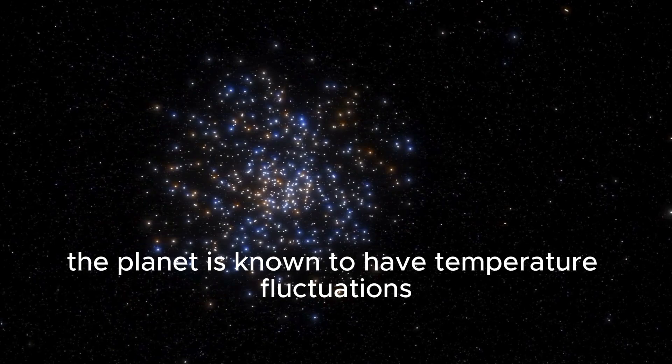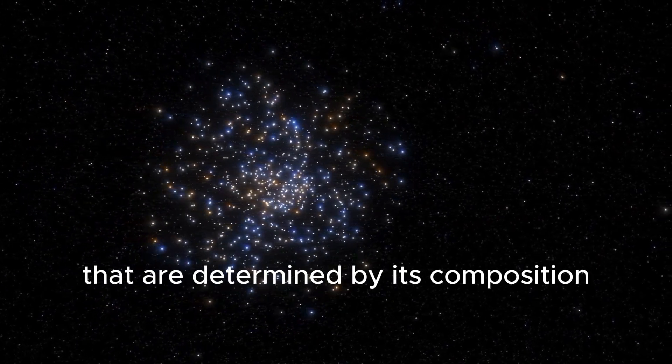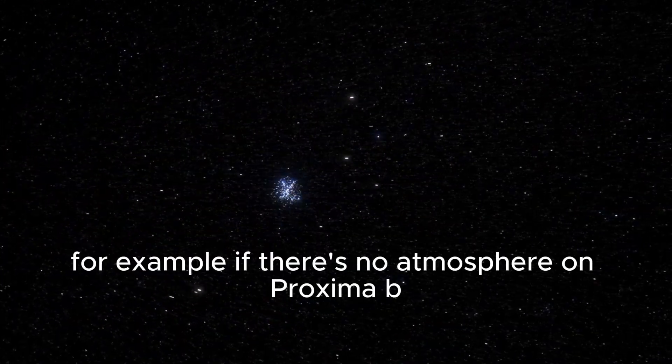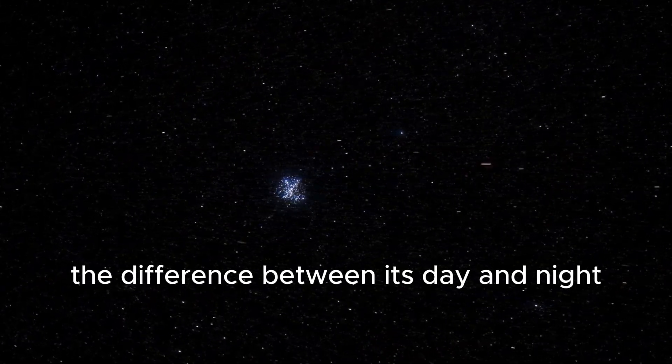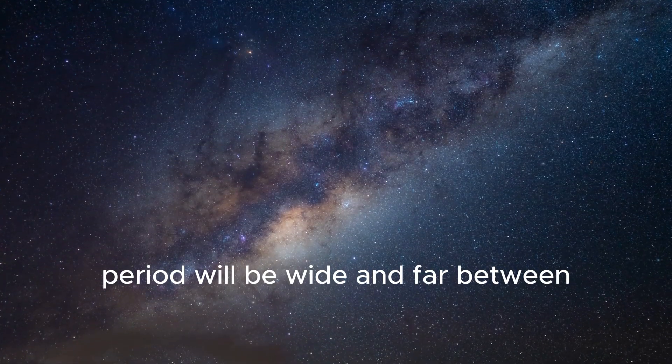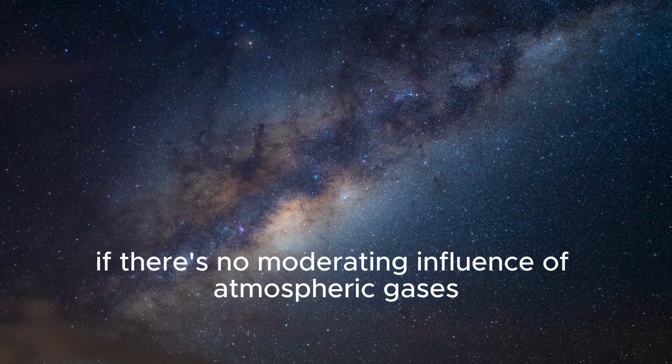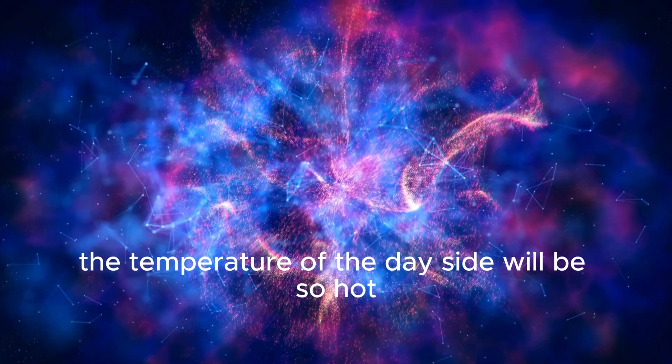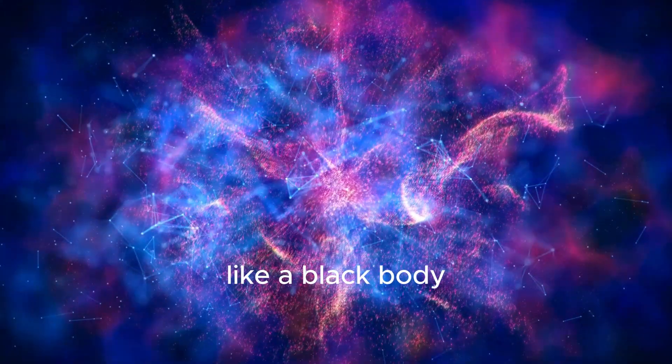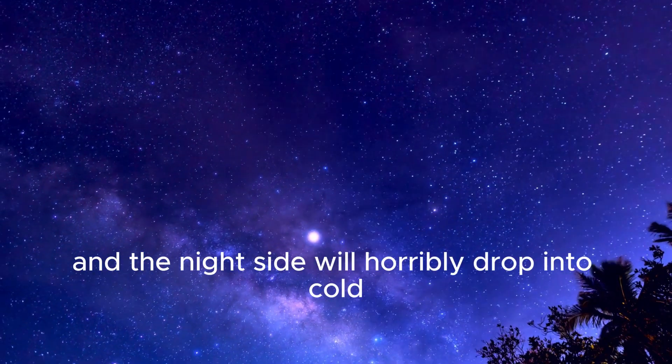The planet is known to have temperature fluctuations that are determined by its composition. For example, if there's no atmosphere on Proxima b, the difference between its day and night periods will be wide and far between. If there's no moderating influence of atmospheric gases in oceans, the temperature of the day side will be so hot like a black body and the night side will horribly drop into cold darkness.